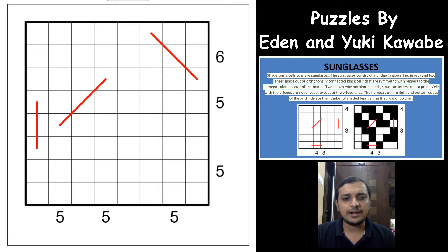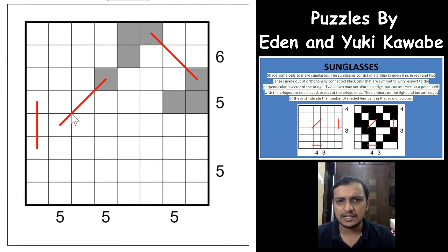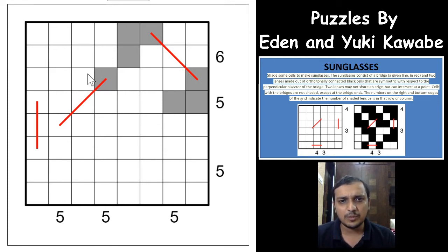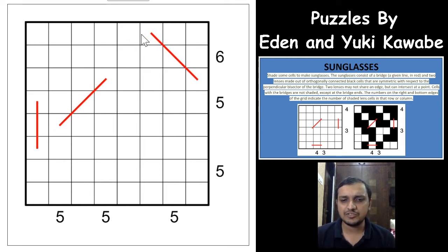The digits indicate the number of shaded cells in that particular row and column which are part of the lenses. Each of the lenses will not touch each other — even the lenses of the same sunglasses won't touch each other orthogonally, but they can touch diagonally. The lenses of different sunglasses also cannot touch each other orthogonally. So these two lenses of different sunglasses cannot touch orthogonally, only diagonally. With that, we will start solving this puzzle.